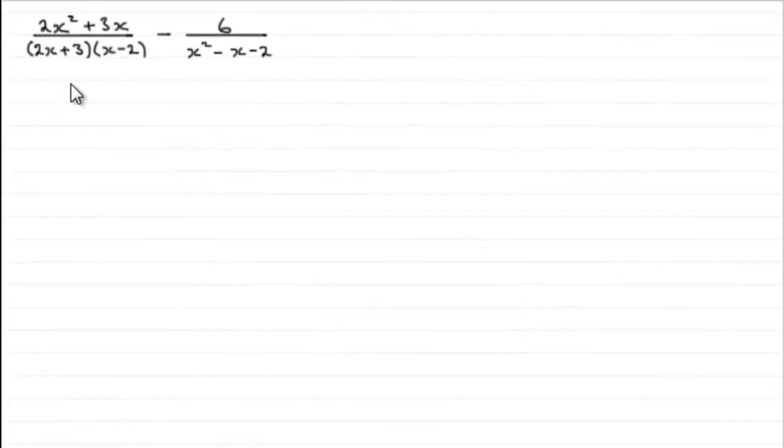Okay then, we're asked to simplify this expression. 2x squared plus 3x all over 2x plus 3 times x minus 2, minus 6 all over x squared minus x minus 2.